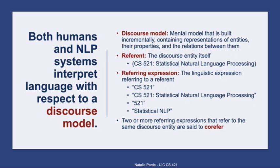This brings us to some key terminology you'll hear when discussing co-reference resolution. Co-reference resolution assumes that language is interpreted with respect to a discourse model containing representations of different entities, properties of those entities, and the relations between them. A referent is a discourse entity itself — the symbol within that discourse model to which individual referring expressions are mapped.